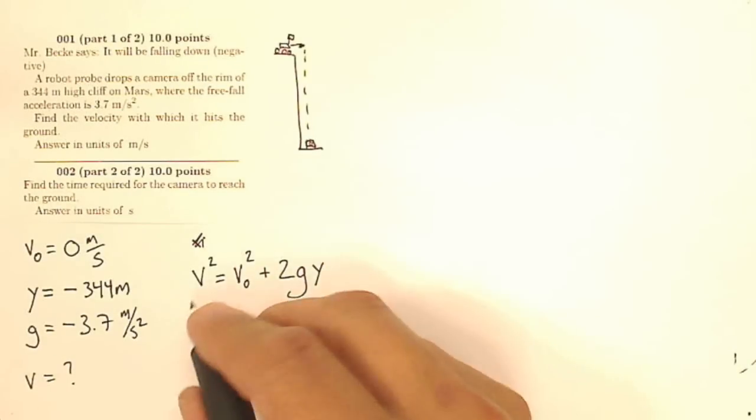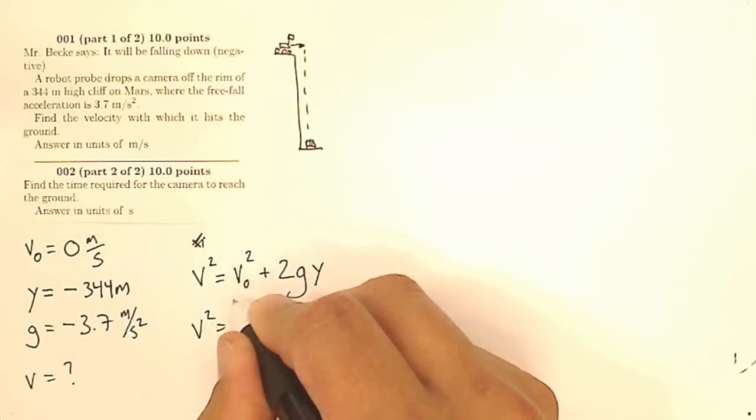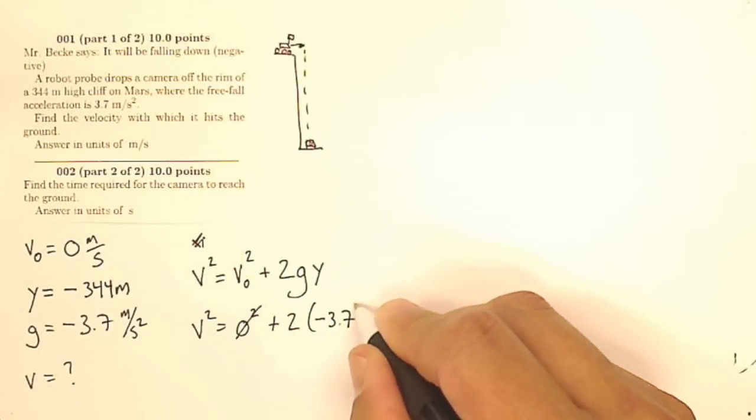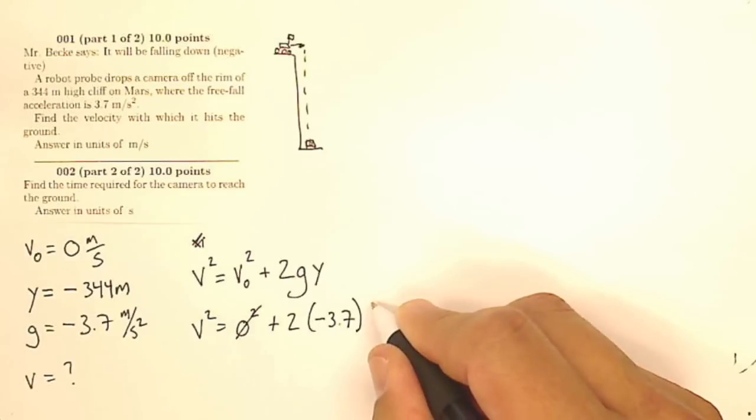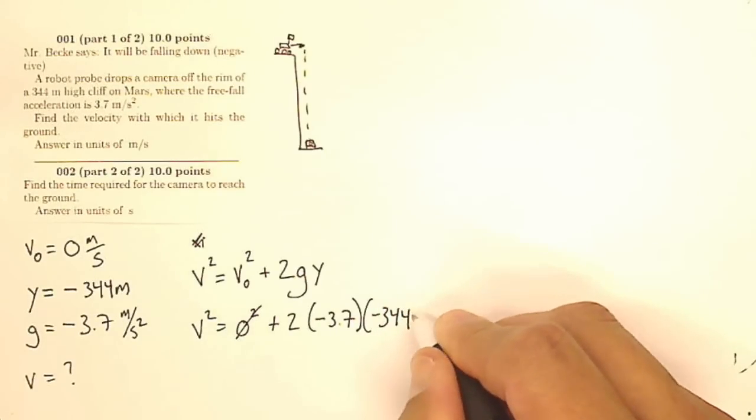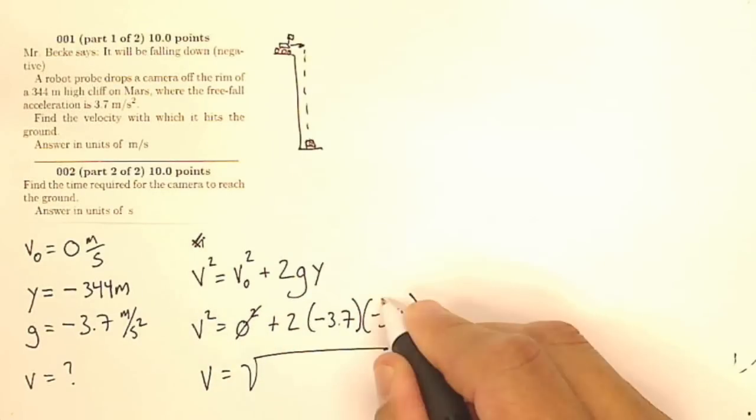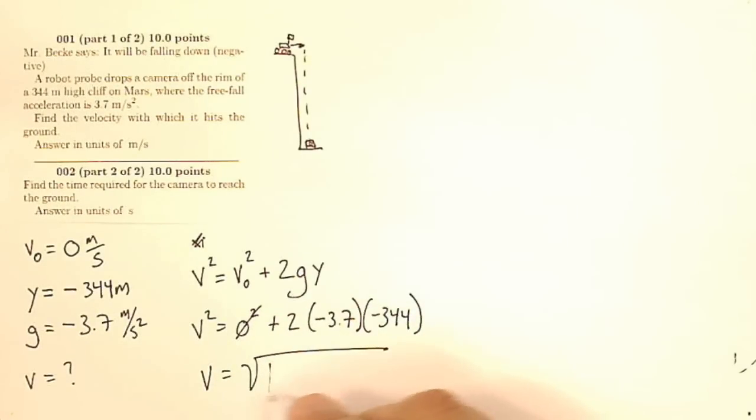So my final velocity is what I'm looking for, equals my initial velocity squared, well that's zero squared, so that goes away, plus twice my acceleration is negative 3.7, and my displacement is going to be negative 344. So my velocity squared is going to be that, I've got a negative and a negative, that'll make that positive, so my final velocity is going to be the square root of all of that, and I'll get some number for all of that, and that's going to be my final velocity.